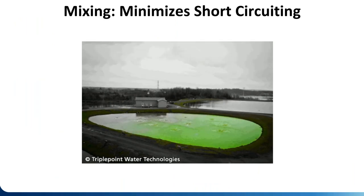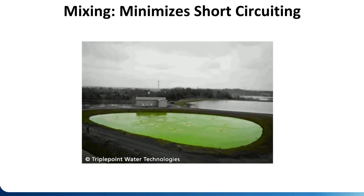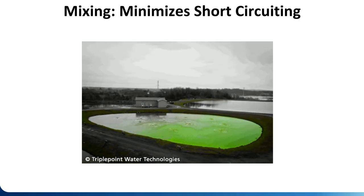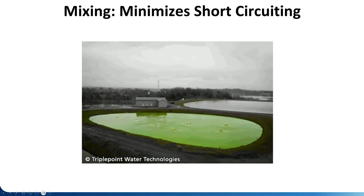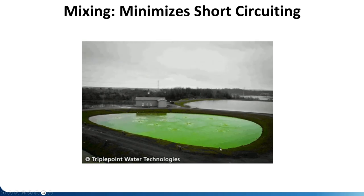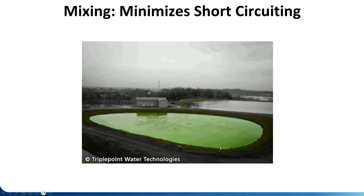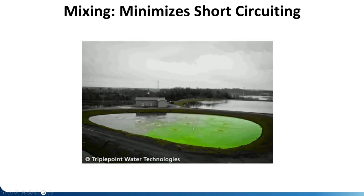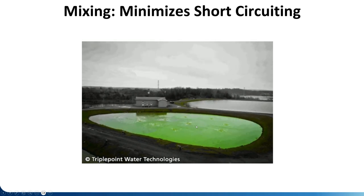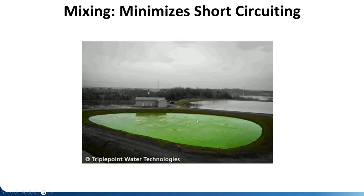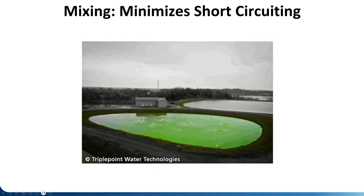Mixing also prevents short circuiting — where water beelines from the influent to the effluent without spending its full hydraulic retention time in the basin. One facility was struggling with treatment and couldn't figure out why. A dye test revealed the influent was jetting straight across just 30 feet to the effluent pipe, bypassing most of the pond. The water was short-circuiting and undertreated waste was being discharged to the next pond — that's why performance was poor.